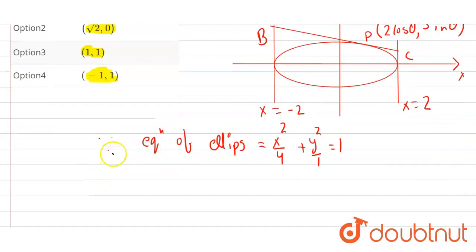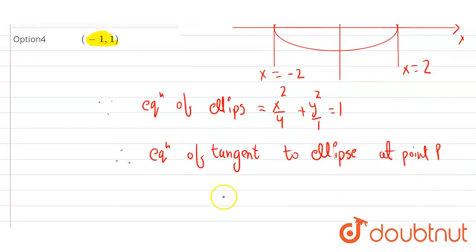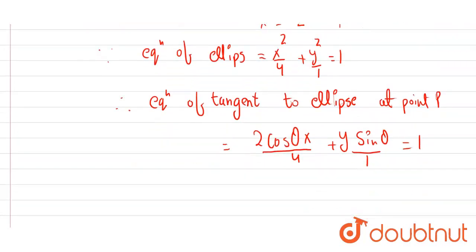Therefore, here we can write equation of tangent to the ellipse at the point P. The equation is going to be 2 cos theta x upon 4 plus y sin theta upon 1 equals to 1. This is the equation of tangent to the ellipse at point P.